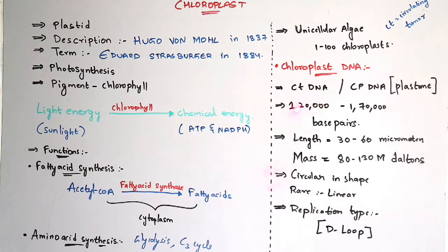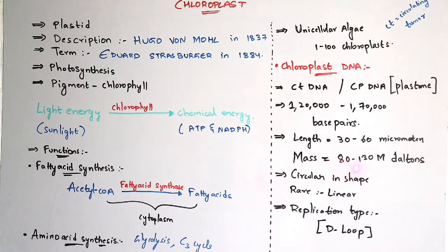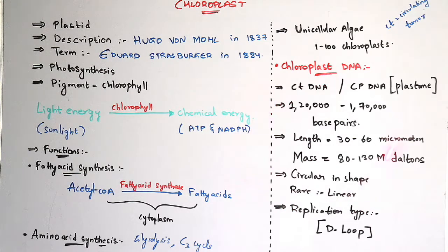This DNA consists of 120,000 to 170,000 base pairs. Base pairs are nothing but nucleotides — nitrogenous bases — for example adenine, guanine, cytosine, thymine, and uracil. The length of the DNA is 30 to 60 micrometers and the mass of the chloroplast DNA is 80 to 130 million daltons. This chloroplast DNA is circular in shape; rare chloroplasts consist of linear DNA. The replication type of this chloroplast DNA is D-loop replication.